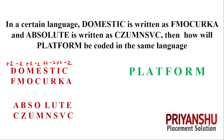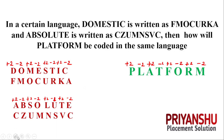Similarly, the next word also follows the same pattern: A is 1, C is 3, so plus 2; B to Z is minus 2; continuing plus 2, minus 2. So in the same way for 'platform', we apply plus 2, minus 2, plus 2, minus 2, plus 2, minus 2, plus 2, minus 2 from the start.